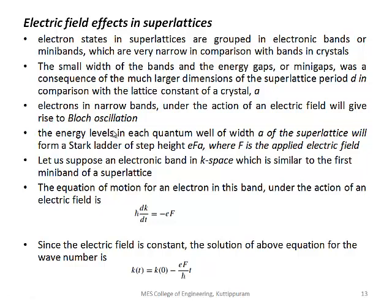In superlattices with multiple quantum wells, the width of the quantum well determines different energy levels. When applying an electric field, it exhibits a Stark ladder shape. The potential is eFa, where F is the applied field, a is the superlattice period, and e is the electron charge.